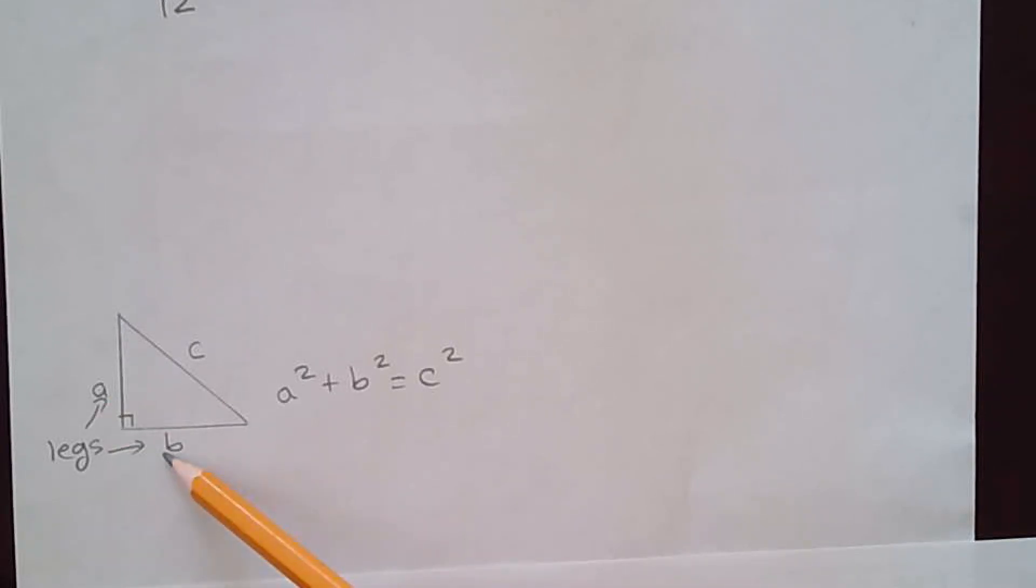I want to remind you of the Pythagorean theorem. Here you have a right triangle. a and b are the legs of the triangle and c is the hypotenuse. c is opposite the 90 degree angle and Pythagorean theorem states that a² + b² = c².